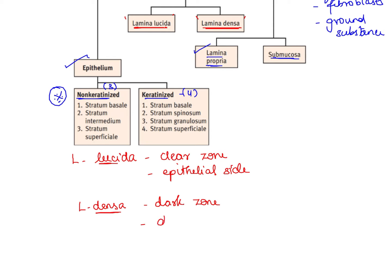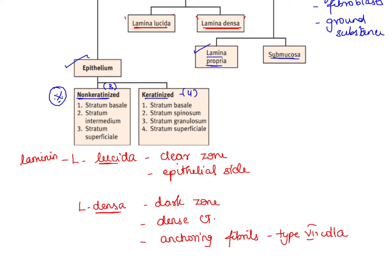Lamina densa is towards the dense connective tissue side of the oral mucosa. Lamina lucida consists of laminin, whereas lamina densa is the attachment point for anchoring fibrils of type 7 collagen. Both lamina lucida and lamina densa are parts of the basement membrane, and type 4 collagen is predominantly found in the basement membrane — both layers contain type 4 collagen.